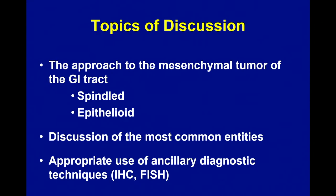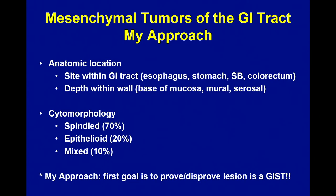The way I'm going to approach this is divided up into the primary cytology — the differential for a spindle cell tumor versus an epithelioid tumor — and talk about the most common entities and, where appropriate, the use of ancillary diagnostic techniques, mostly immunohistochemistry.